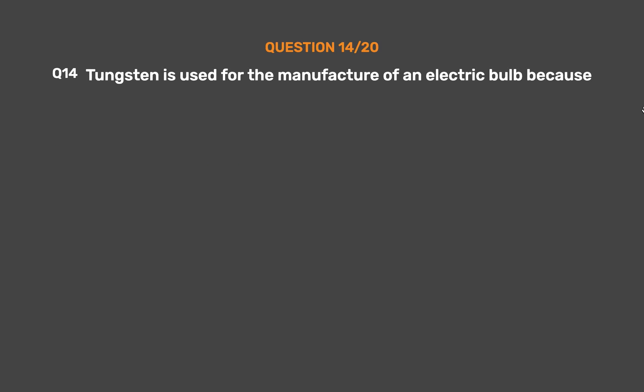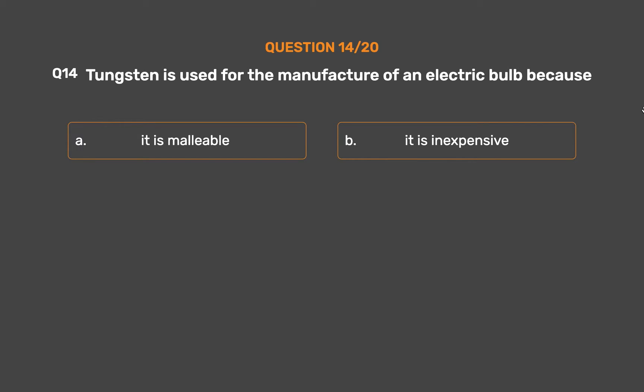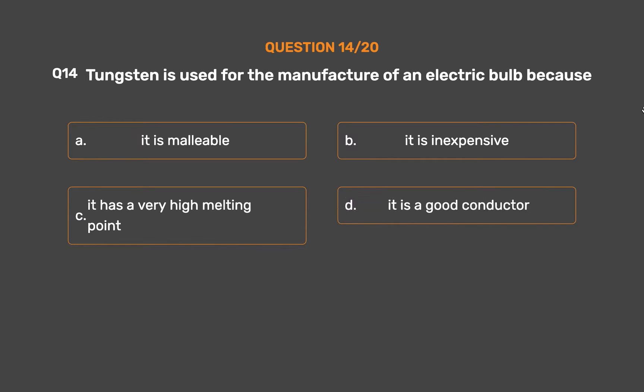Question number 14. Tungsten is used for the manufacture of an electric bulb because: Option A: It is malleable. Option B: It is inexpensive. Option C: It has a very high melting point. Option D: It is a good conductor.